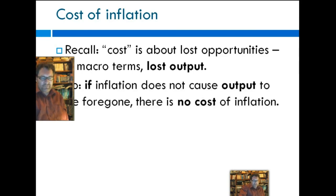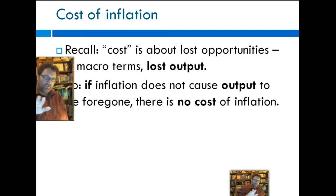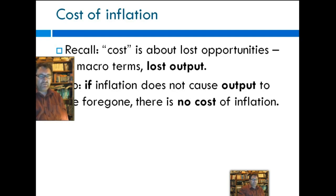What that means is, it has an interesting implication: if inflation causes output to fall — inflation itself, not some phenomenon which is indirectly related to inflation, but the inflation itself causes unemployment — then we would say that there is a cost to inflation. If, on the other hand, the presence of inflation does not actually cause output to be lost, then there is no cost to inflation to the economy as a whole.